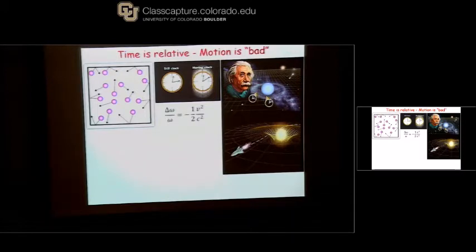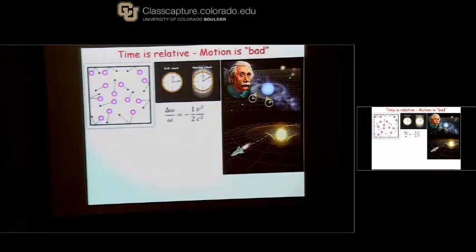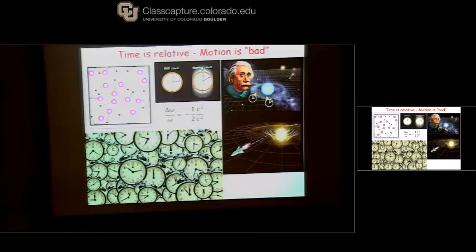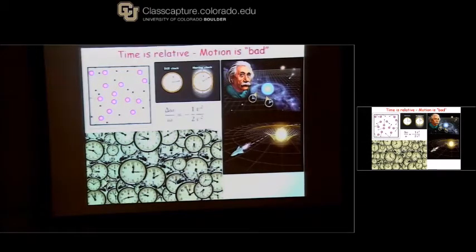Einstein always had thought experiments — Gedanken experiments — where a little man carries a clock everywhere. That's how he figured out special time curvature and general relativity. If you carry your clock with you, you find the time tells you different things if you don't control the velocity or height of the clock. You can make nice clocks, but they will all run at different rates because of time dilation effects.